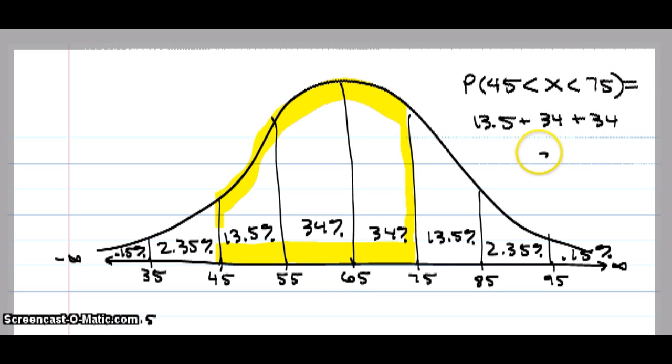This equals 81.5%. If I wanted to know the probability that x is greater than 85, I would add up the 2.35% plus 0.15%.